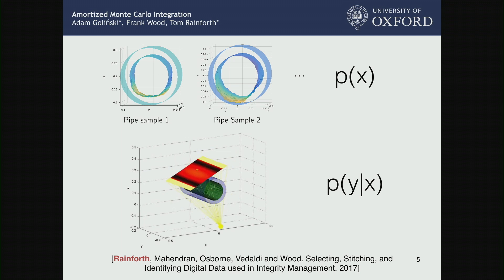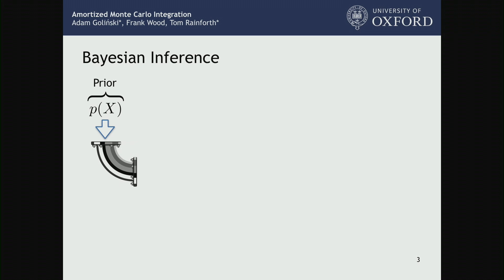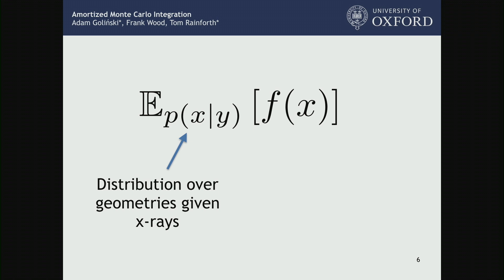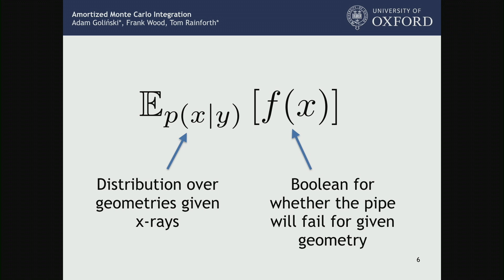So this Bayesian inference framework is inverting this: given we're getting this set of images out, what are the geometries that led to it? We're running this in reverse. To do this, we've got to get around this normalizing constant. We particularly care about expectations with respect to that distribution — the probability this pipe is going to fail — which is an expectation under possible pipe geometries of some failure function. So we have an expectation with respect to a distribution we only know up to a normalizing constant.